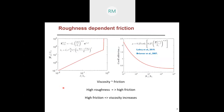For the friction, we use a normal load-dependent coefficient of friction which decreases with normal load. It has been observed that by using this friction law we can recover the shear thinning that is observed for suspensions with intermediate volume fractions.